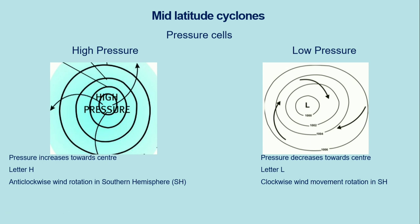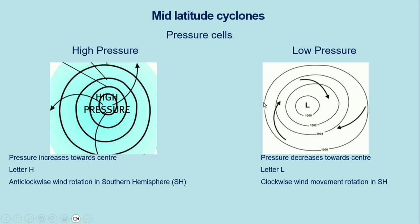One important thing to note: the high pressure cell is dominated by normally cold winds, whereas the low pressure cell is dominated mostly by warm winds.